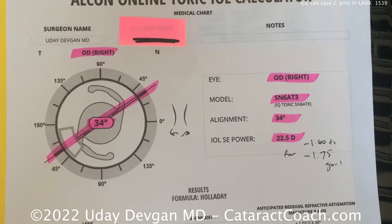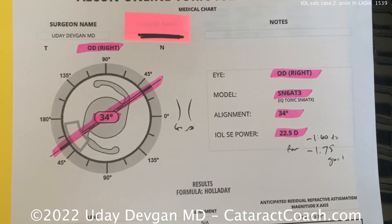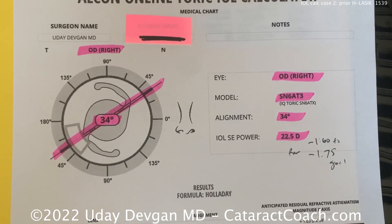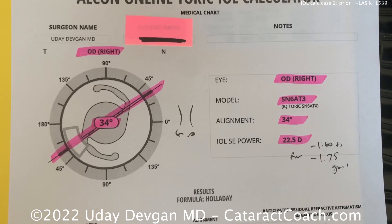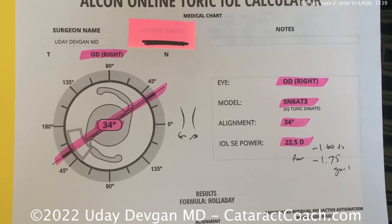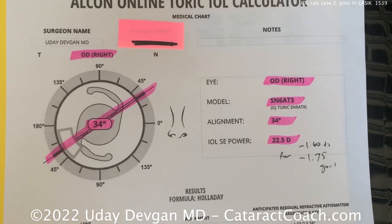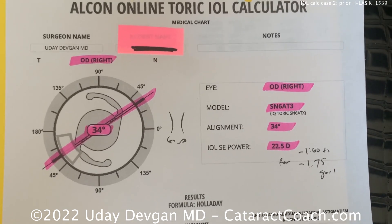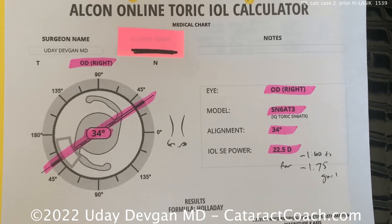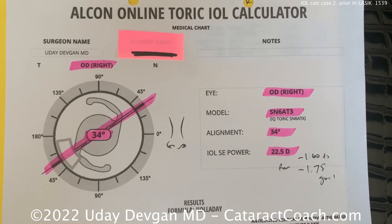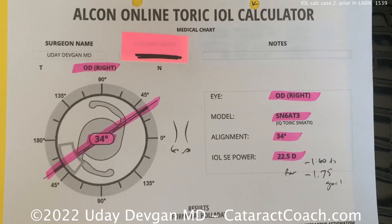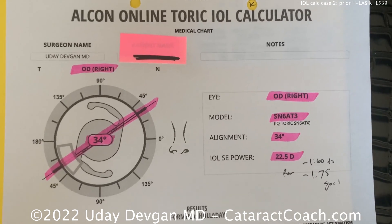Interesting case — anisometropia, but this is a surgical, planned anisometropia from prior monovision LASIK for mild hyperopia, now requiring cataract surgery with hyperopic LASIK history factored in. Hope you learned something. Thanks.